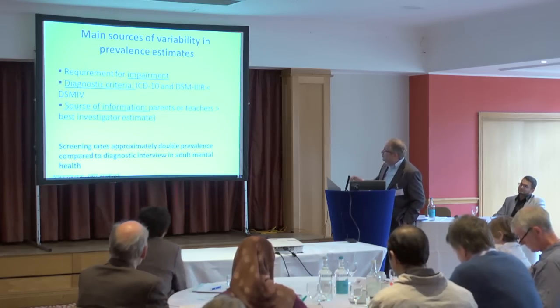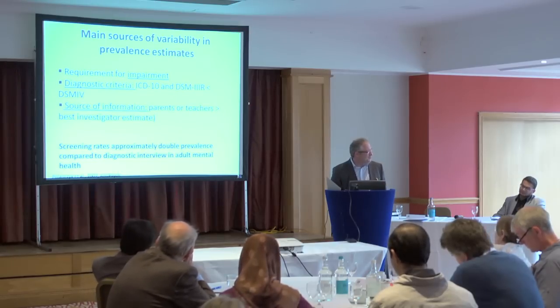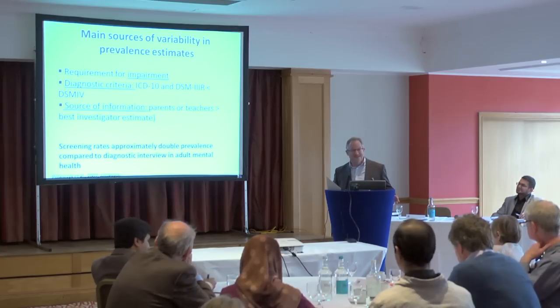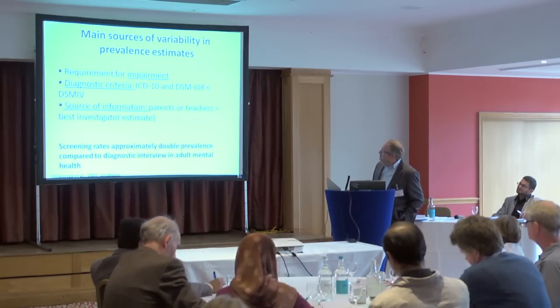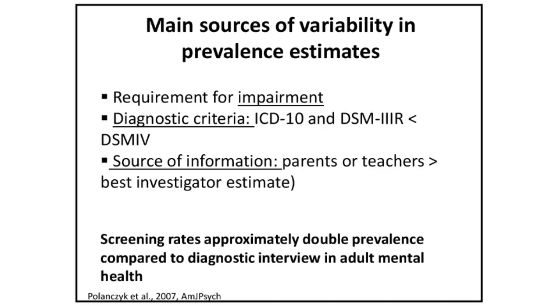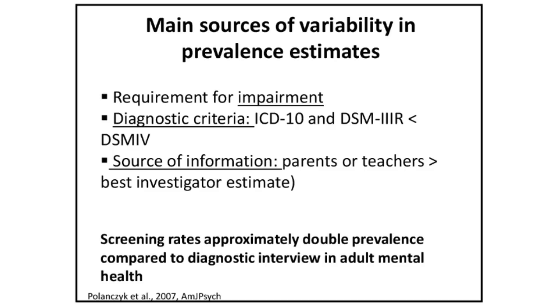Across individual studies there is a massive range of cited prevalence rates — from 2% in one study to 20% in another. The meta-analysis pinned down the key problems. One is the requirement for impairment: if you don't take impairment into account you get much higher prevalence rates. The criteria also make a difference — DSM-IV gives a higher prevalence than either ICD-10 or DSM-III-R. The source of data matters too: parents and teachers filling in rating scales give much higher prevalence than investigators forming their own expert opinion.